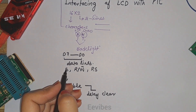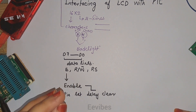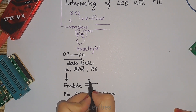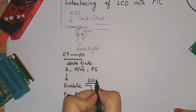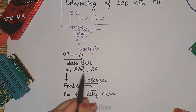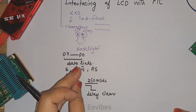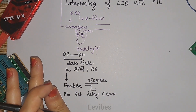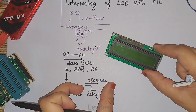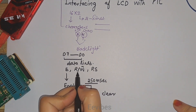One thing that is very important regarding the pulse width of the Enable pin is that its duration should be at least 250 nanoseconds. If you send a pulse lesser than this time period, your LCD will not be able to display the data on its screen. This is the minimum pulse width of the Enable pin that you need to send.